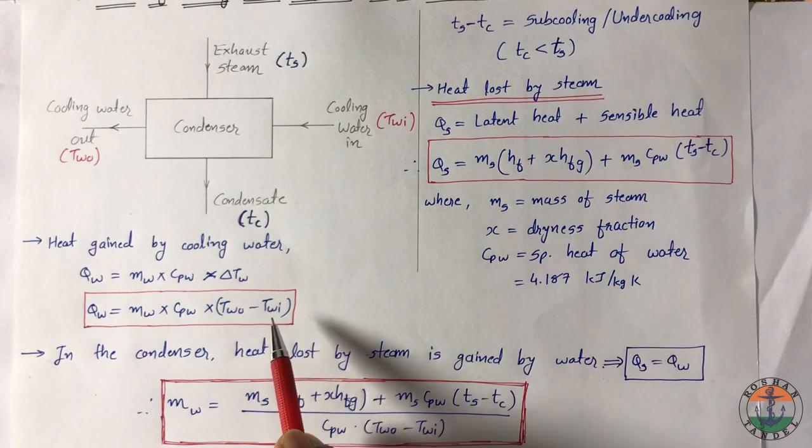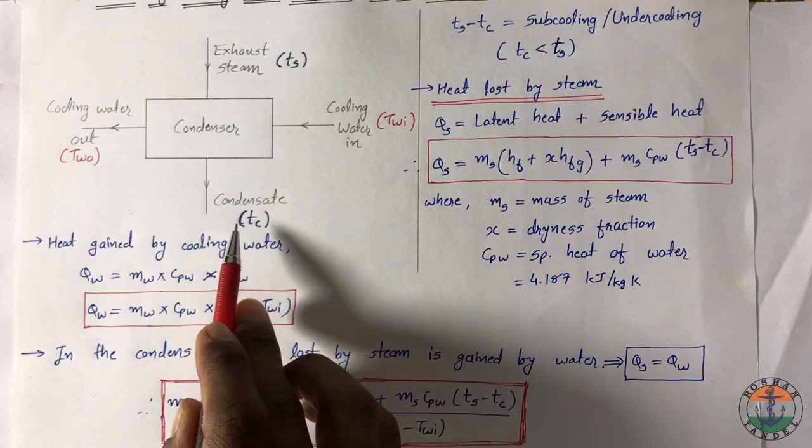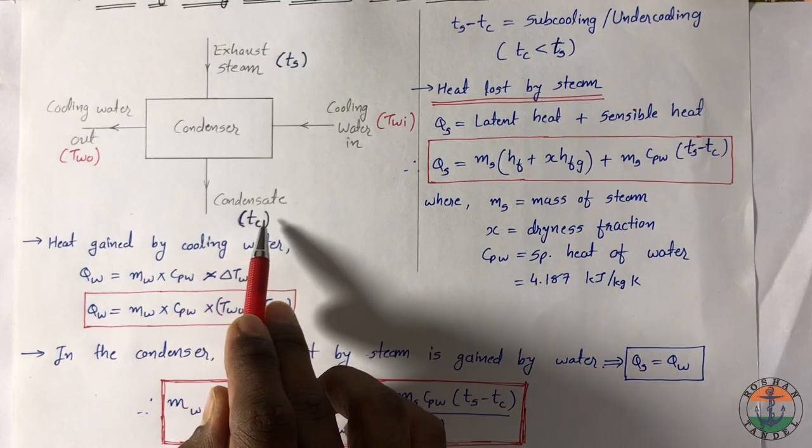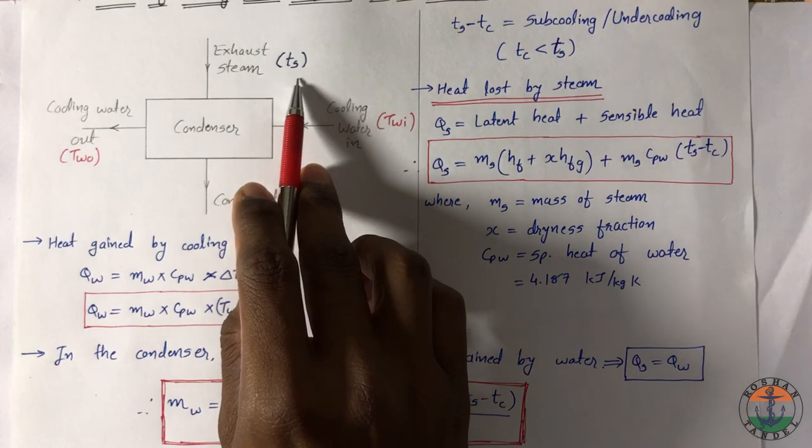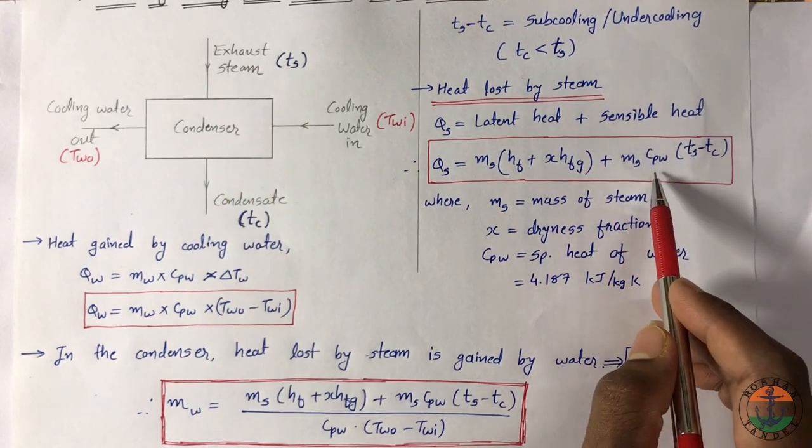Now if you consider energy balance as Qs is equal to Qw, mass of water can be calculated by this equation. If there is no subcooling of condensate, then output temperature will be equal to Ts. So here sensible heat component you have to neglect, keep using the latent heat component.